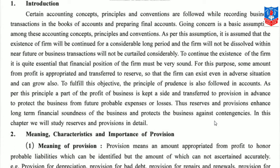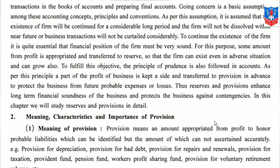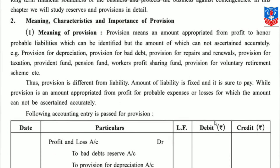Now let us go through the meaning, characteristics and importance of provision. On the screen you can see the meaning of provision: Provision means an amount appropriated from profit to honor probable liabilities which can be identified but the amount of which cannot be ascertained accurately. Provisions are amounts set against your liabilities — money set aside from profits to face liabilities. Those liabilities can be identified, but the exact amount cannot be determined precisely.